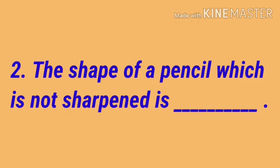Number 2: The shape of a pencil which is not sharpened is dash. That means you have to write the shape of your new pencil, whether it is conical, cylindrical, cubical. Whatever is the shape you write it.